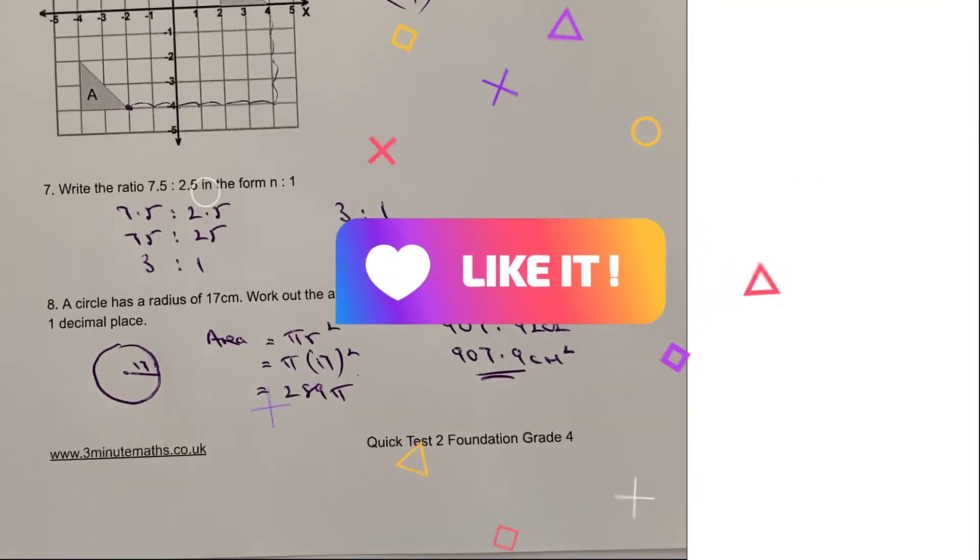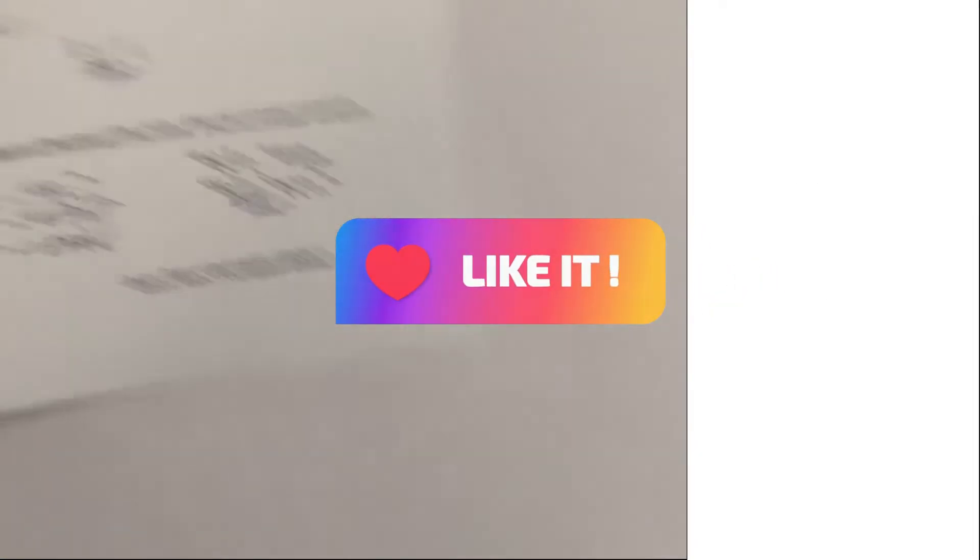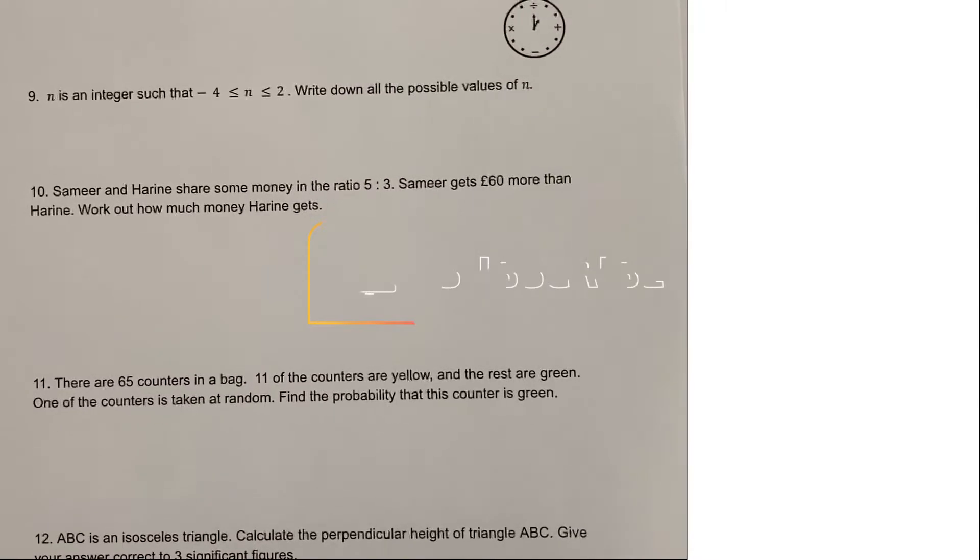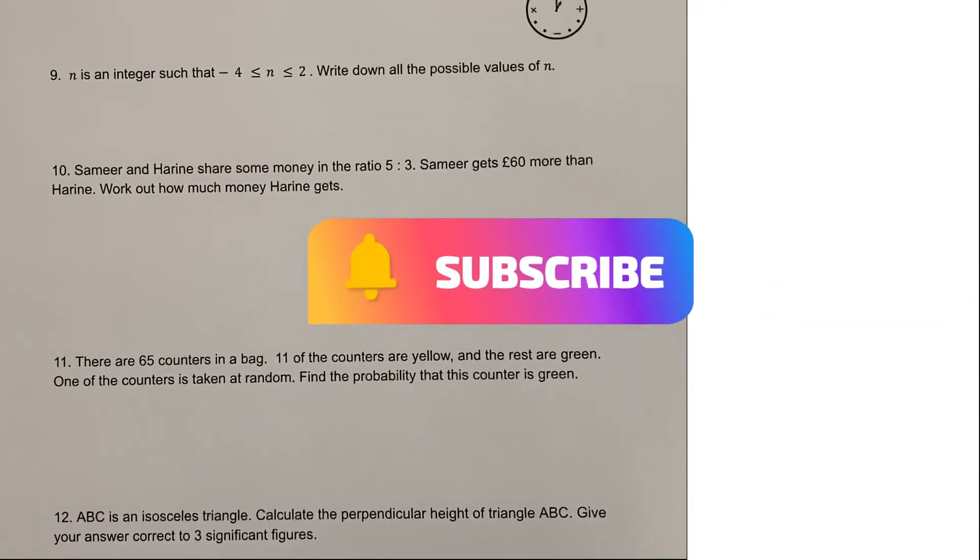However, in this particular one, it says give your answer correct to one decimal place. So if I multiply this on a calculator, I'm going to get 907.9202. So to one decimal place is going to be 907.9 centimeters squared. And that would be the answer to question number eight. Please do stop the video, have a go at each of these questions, and then compare your solutions.